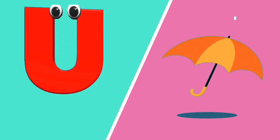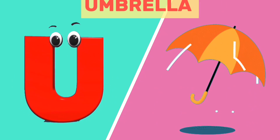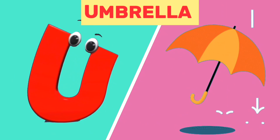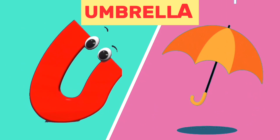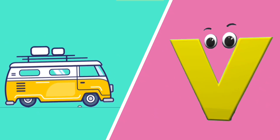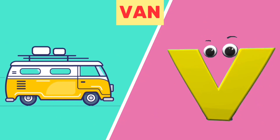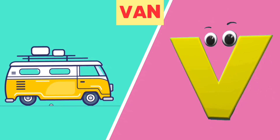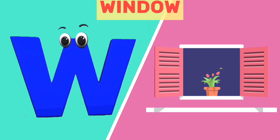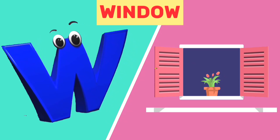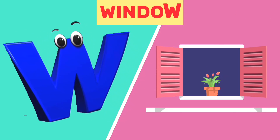U is for umbrella. U, u. Umbrella. V is for van. V, v. Van. W is for window. W, w. Window.